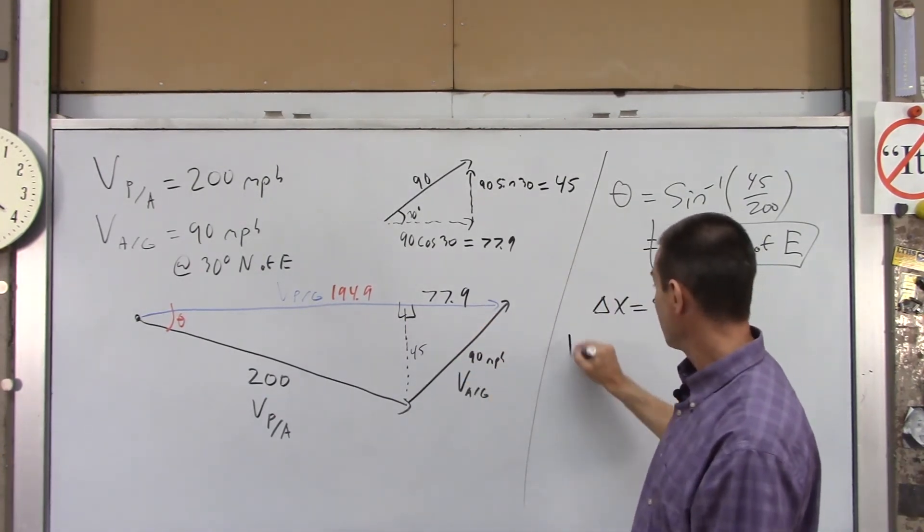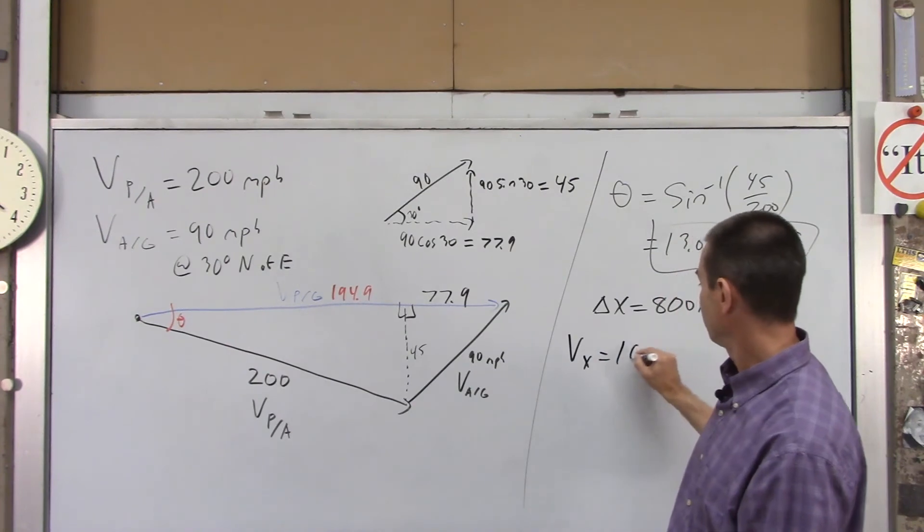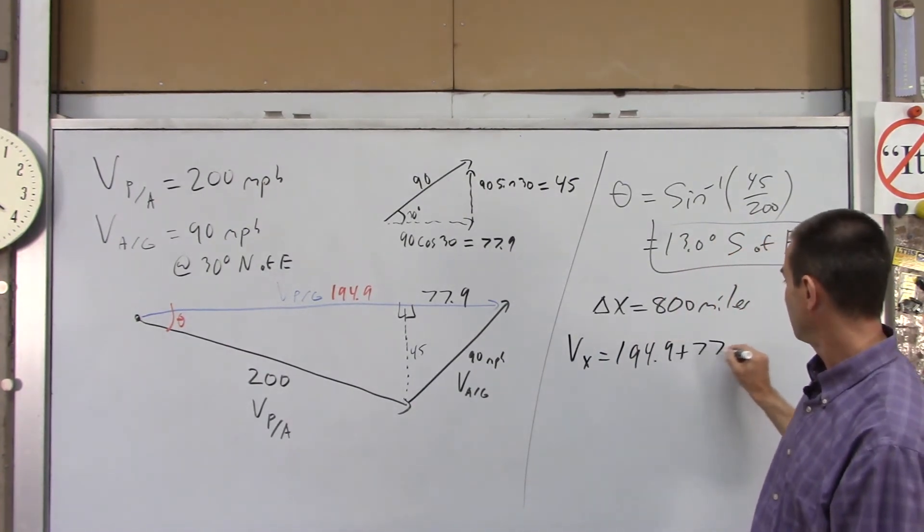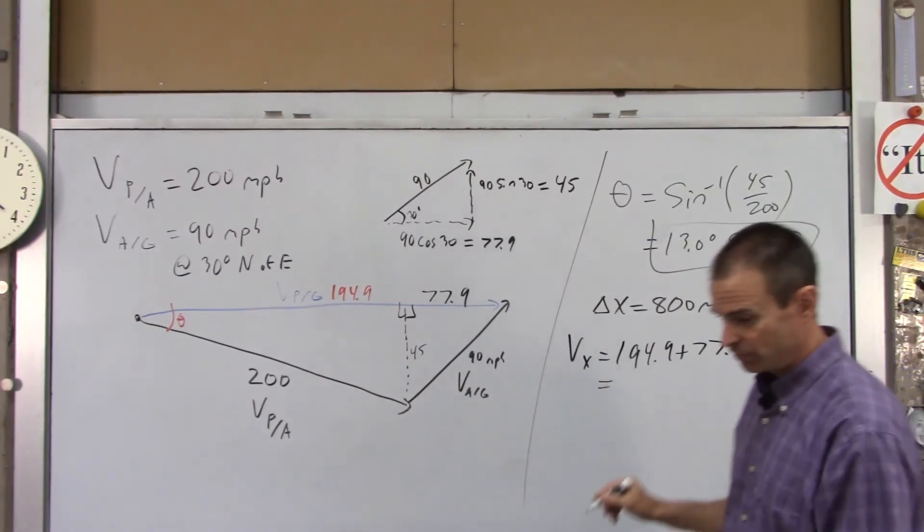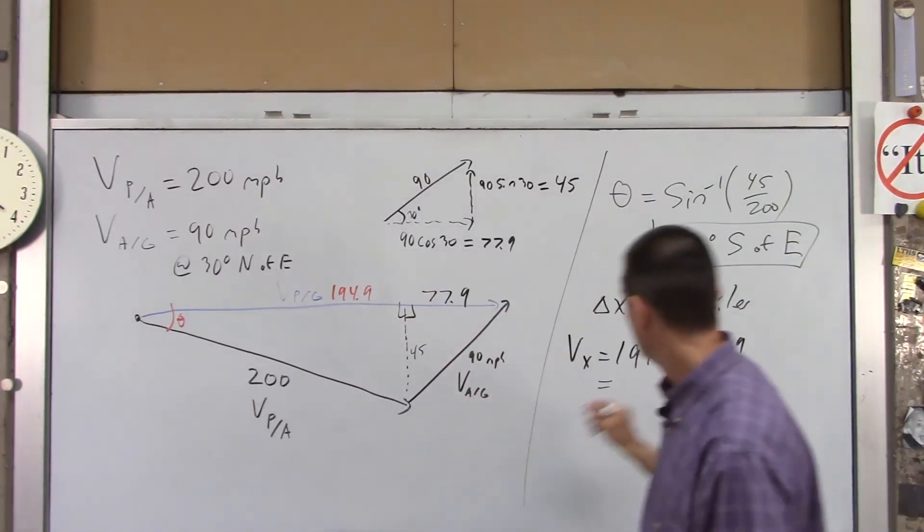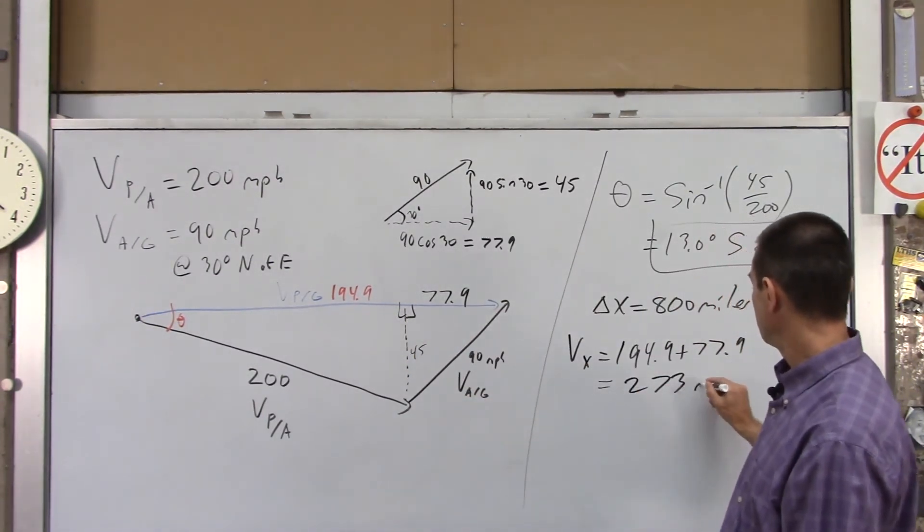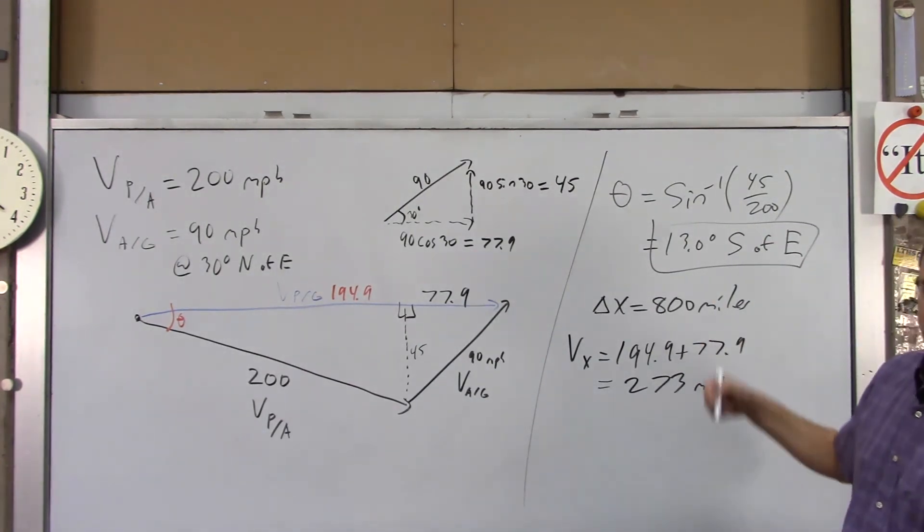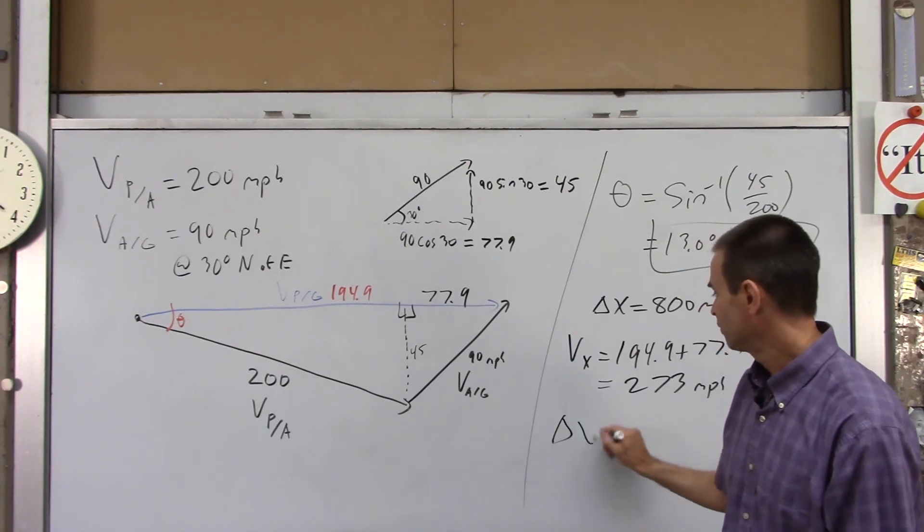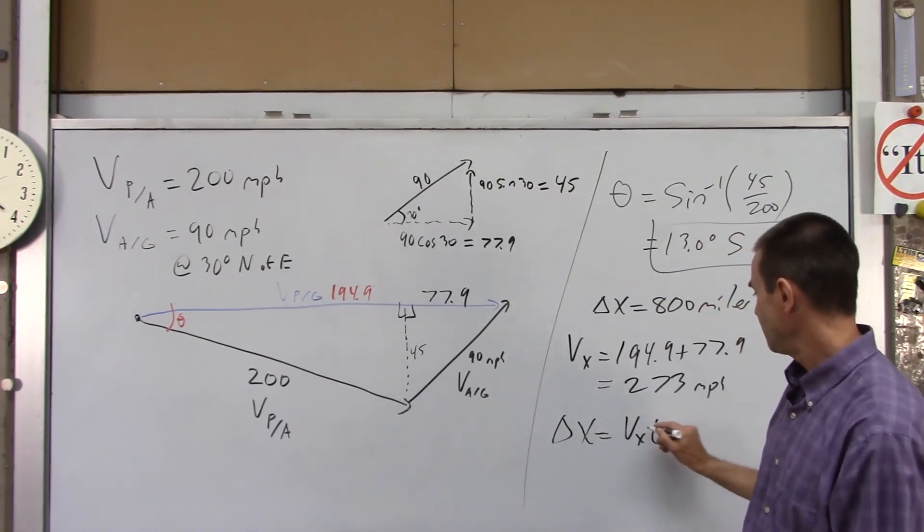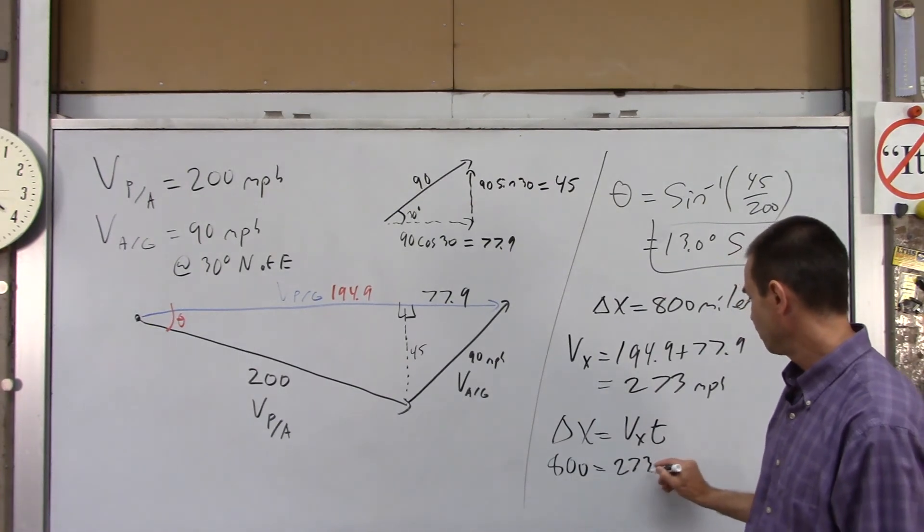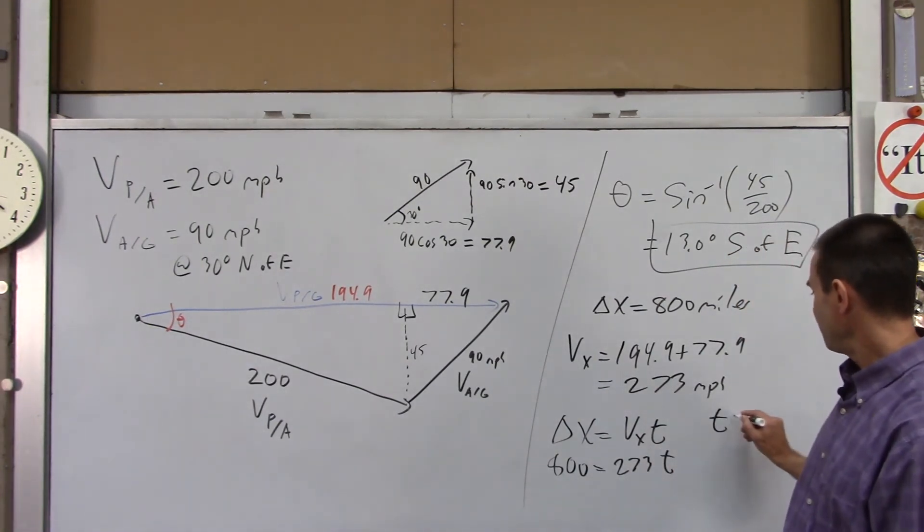So Vx would be 194.9 plus 77.9, which is going to round to 273 miles per hour. So that's just Vx. You know delta x. We know that delta x equals Vx times t. Delta x is 800, Vx is 273 times time.